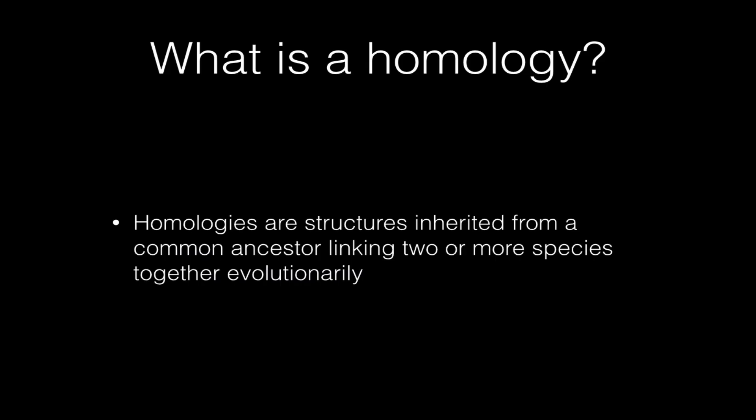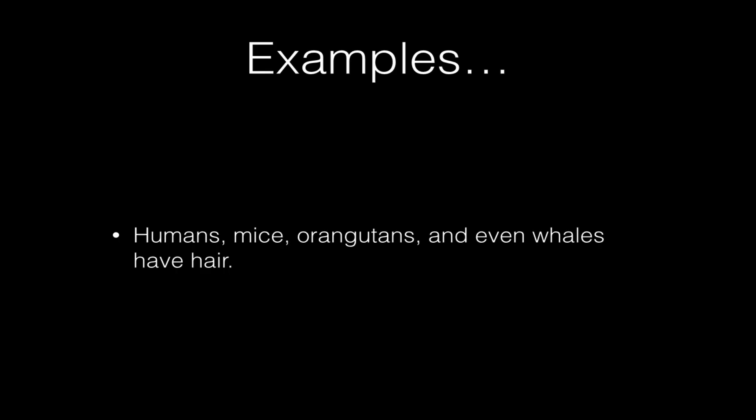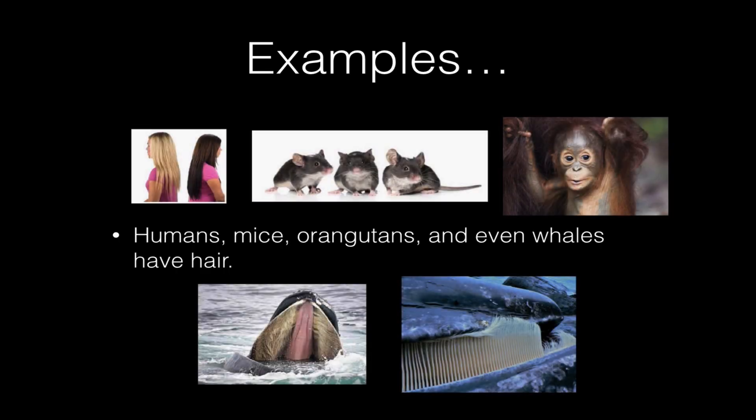Homologies are structures that are inherited from the common ancestor that link two or more species together evolutionarily. For example, we could have humans, mice, orangutans, and whales. These are all examples of mammals with hair. So that tells us that the common mammal ancestor of these organisms probably had hair, because hair is a trait that's been retained by all the descendant species of that original parent species. I bet a lot of you did not know that whales actually possess hair-like structures. When they're inside their mother before they're born, some species of dolphins, the unborn babies actually have a light fur coating for a little while, but then they shed it before they're born.